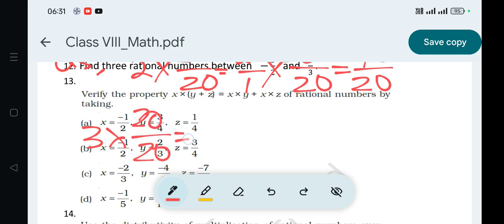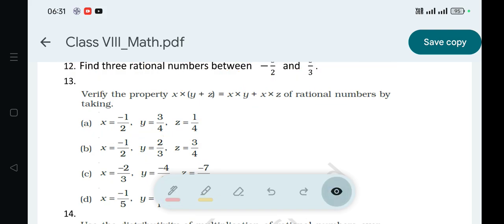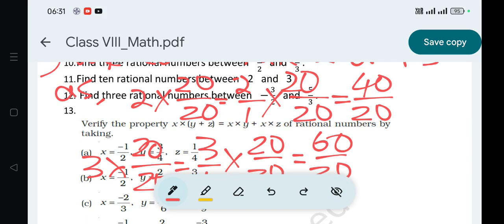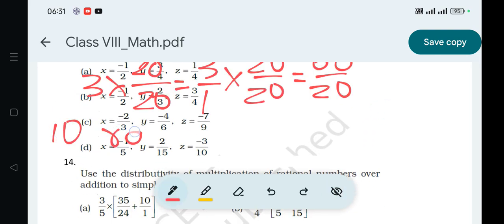Similarly, 3 by 1 into 20 by 20 is equal to 60 divided by 20. If you write it, 3 by 1 into 20 by 20 is equal to 60 divided by 20, which equals 3. And these are rational numbers. Next step lies 10 rational numbers.